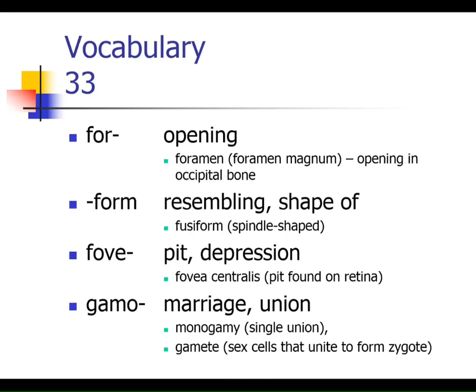So, vocabulary. In lab, you're going to learn tonight or have already learned that a foramen is an opening in the bone — 'for' means opening. If something has the word 'form' in it, like fusiform or spongiform, there's something in that name that resembles a shape. So 'form' means resembling a shape of something. 'Fovea' — when we get to the retina or the eye, we'll talk about the fovea centralis, a little pit or depression found on the retina.